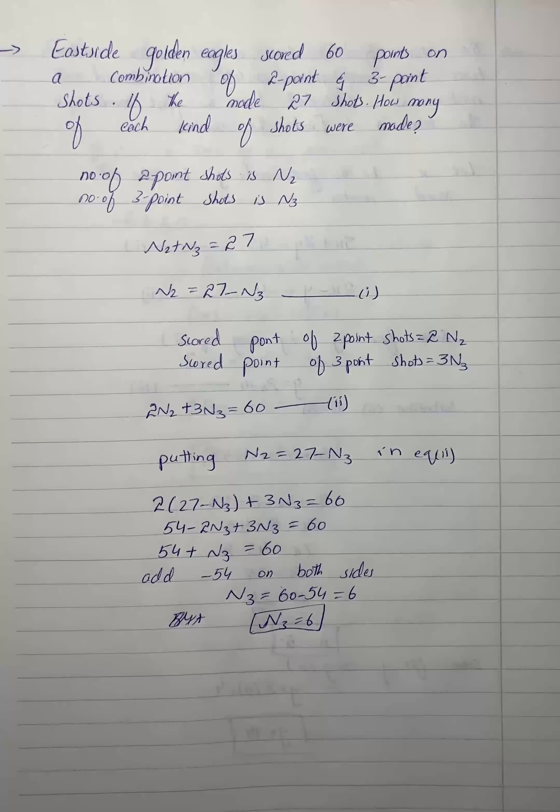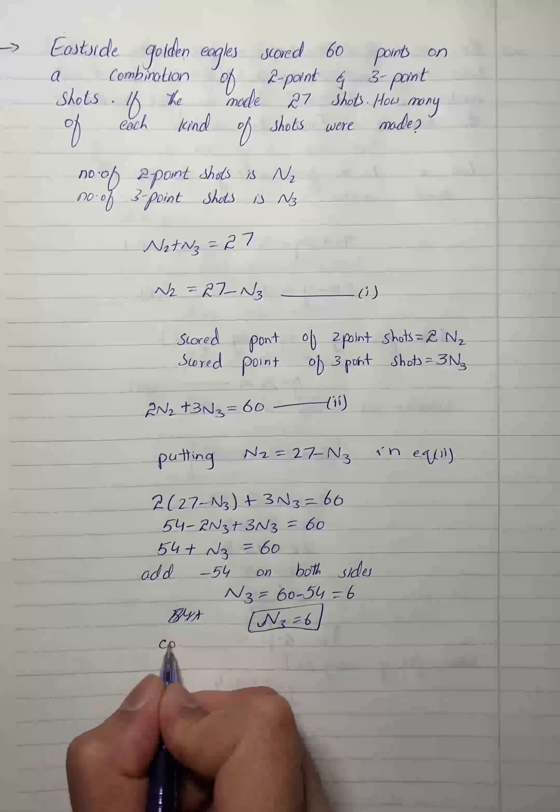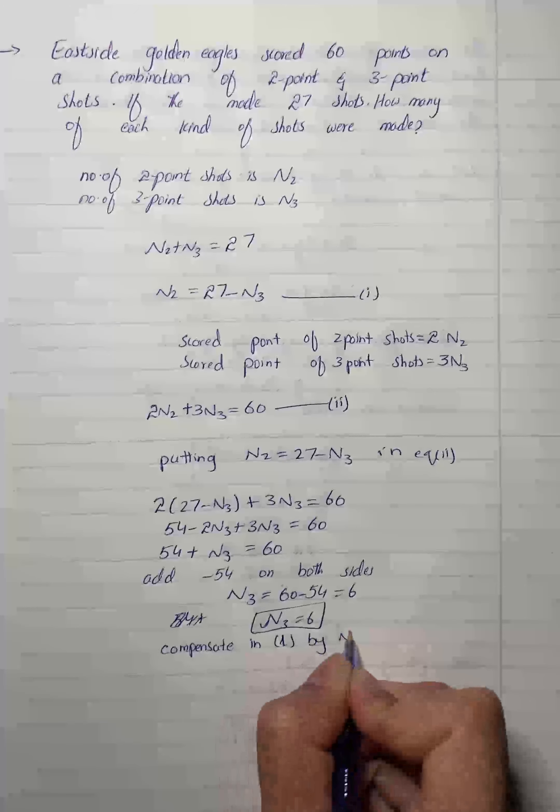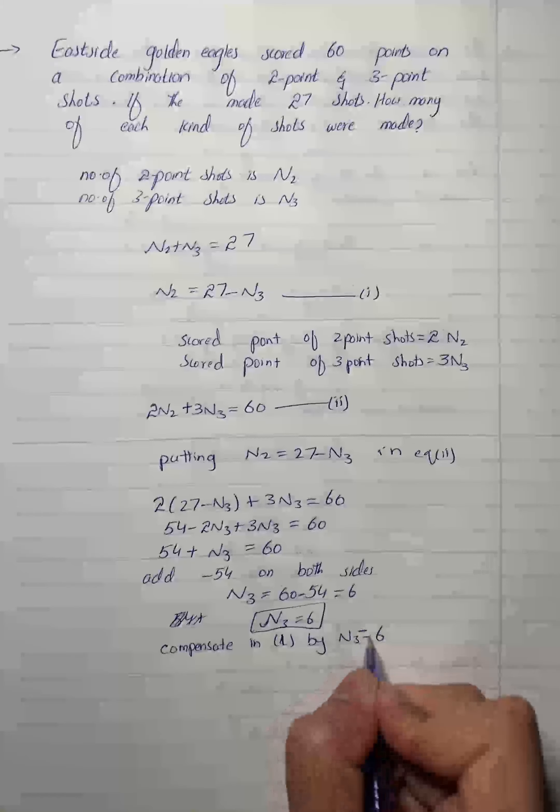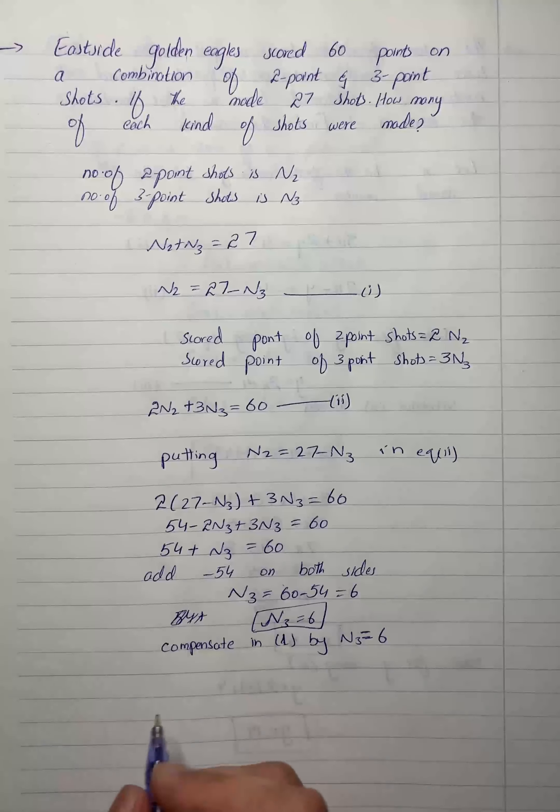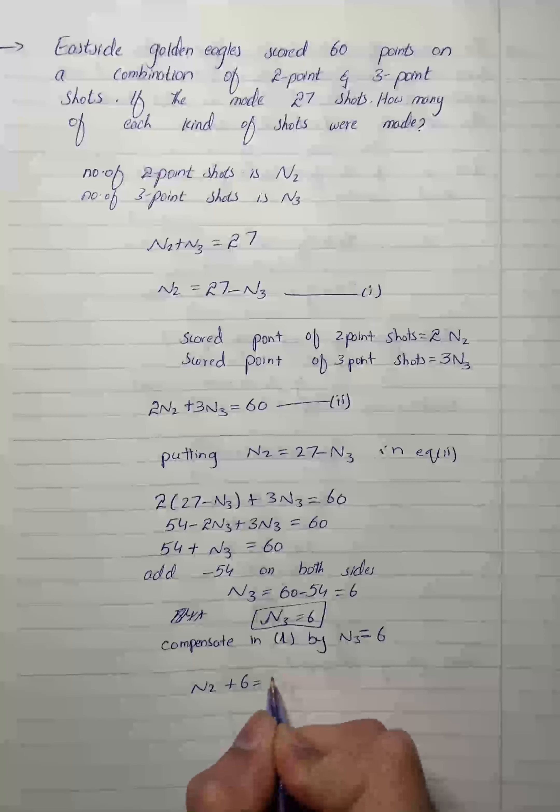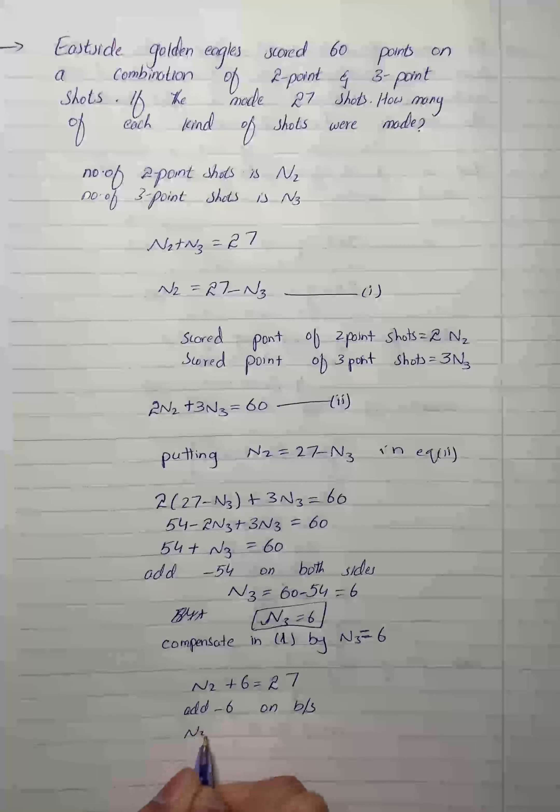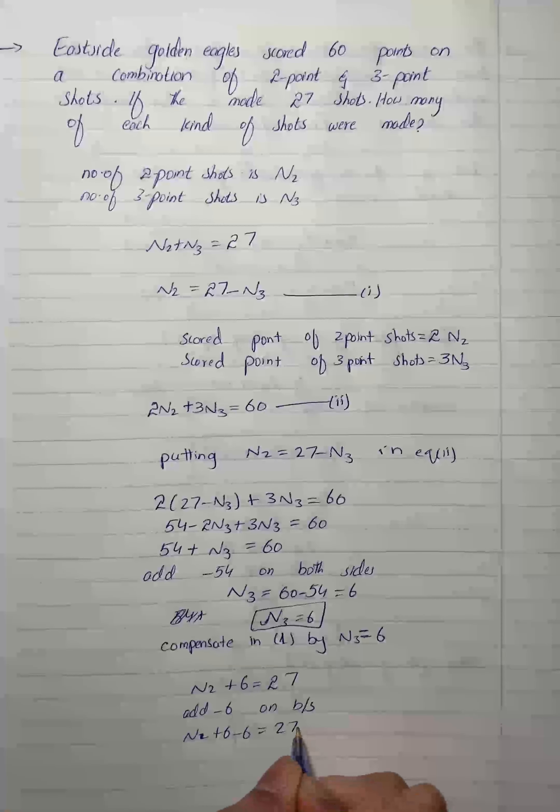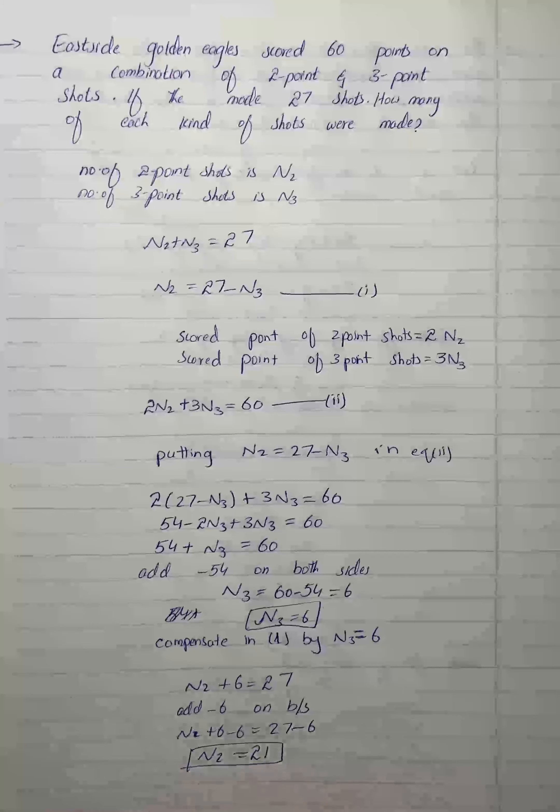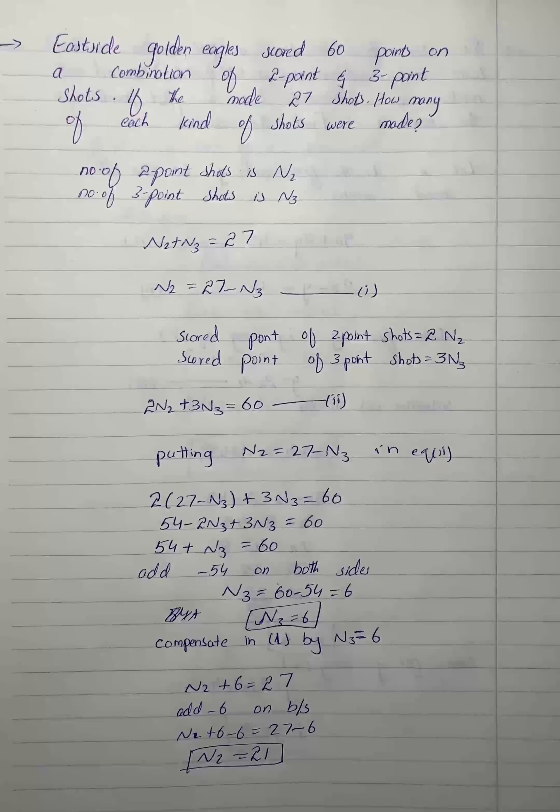Since n2 equals 27 minus n3 and n3 equals 6, we'll put the value of n3 equal to 6 in equation number 1. That will give us n2 equals 27 minus 6. Add minus 6 on both sides to get n2 equals 21.